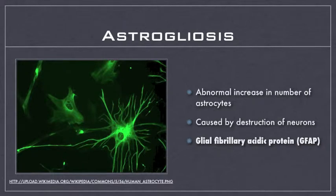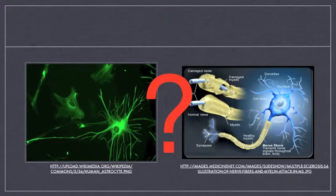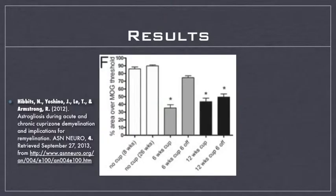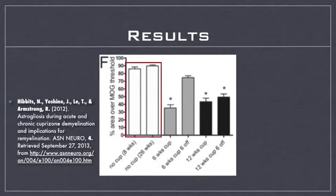Now that I've discussed demyelination, remyelination, and astrogliosis, the big question is how exactly do they correlate to one another? To answer this, we turn to the scientific literature. Researchers have experimented on 8-week-old mice to observe the expression of MOG over acute and chronic demyelination induced by cuprazone. The two bars on the left represent the control group, which ingested no cuprazone and thus had no demyelination. Over the duration of 14 weeks, there was a slight increase in the area of neural tissue over which MOG was expressed, however it was not statistically significant.